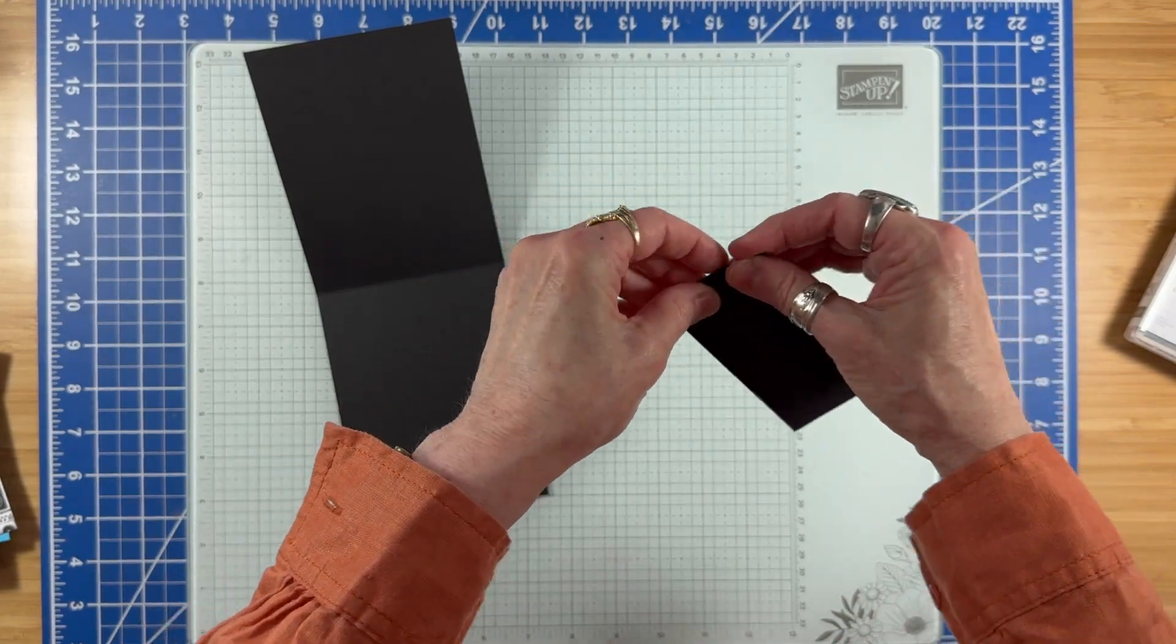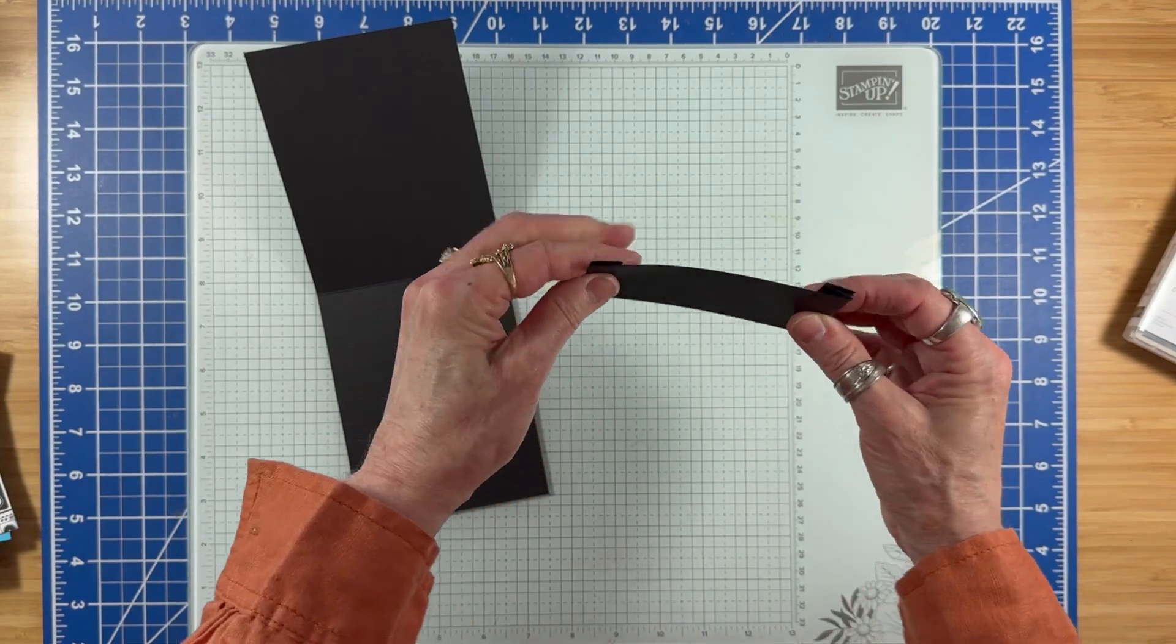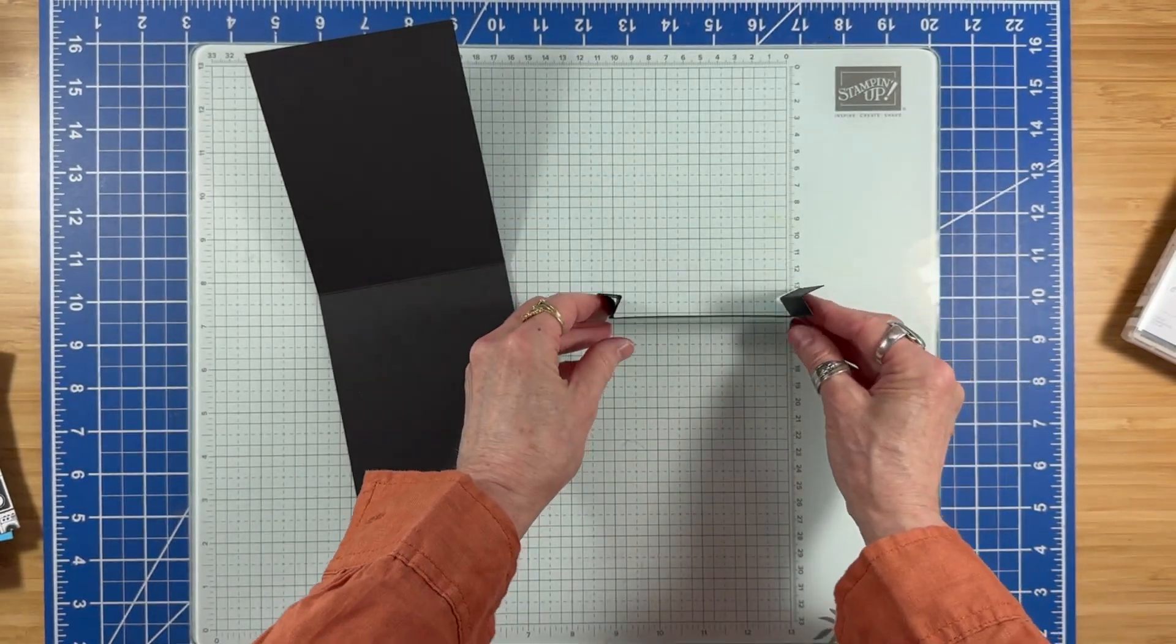I'm going to fold these mountain folds back, valley folds forward. So from the top, it looks like that.